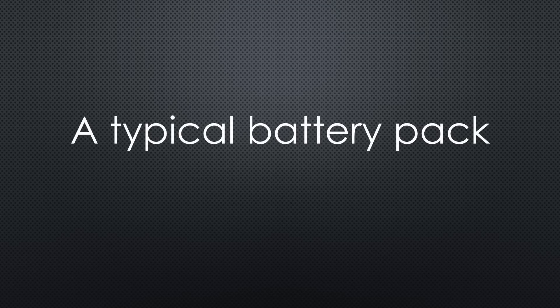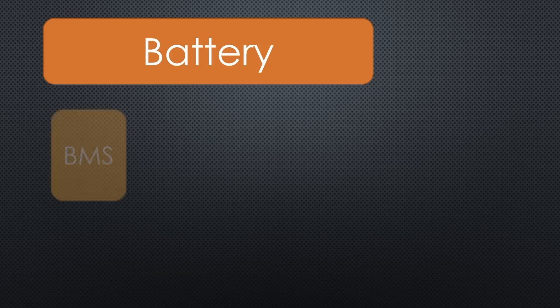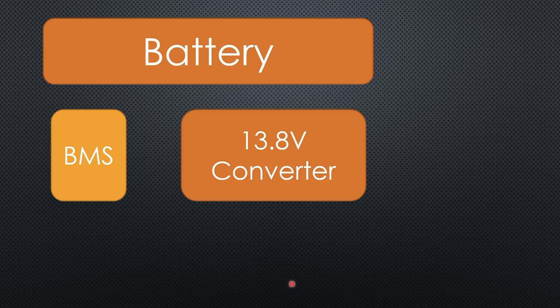If we have a look at a typical battery pack, we see the following components: a battery, a battery management system, and a load. In my situation, it is a DC converter to 13.8V. How are these parts connected? The BMS is on the low side. So one wire is connected to the battery's negative, and the second is connected to the load. The positive of the battery is directly connected to the positive input of the load. The charger, by the way, is connected in parallel to the load. This is a typical low side installation.